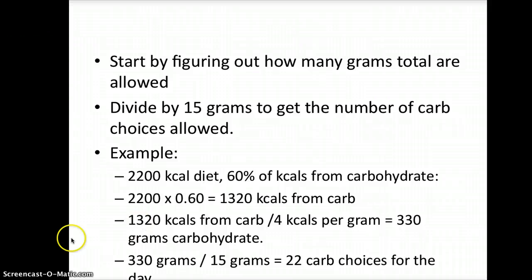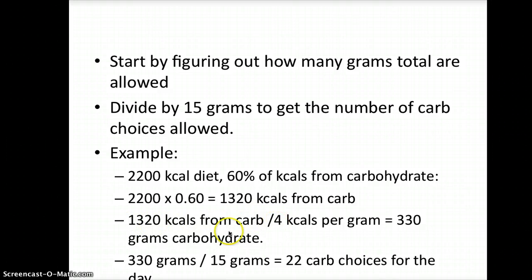To convert 1320 calories from carbohydrate, remember that it's 4 calories per gram. So, 1320 divided by 4 calories per gram is 330 grams of carbohydrate total allowed.